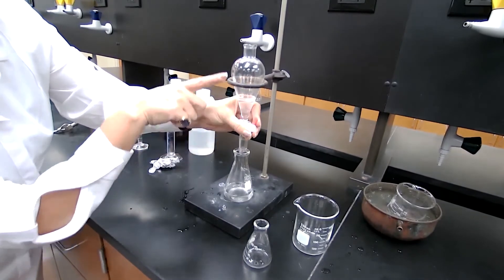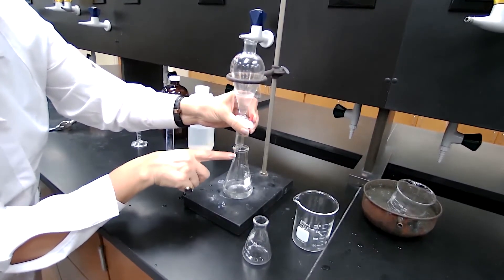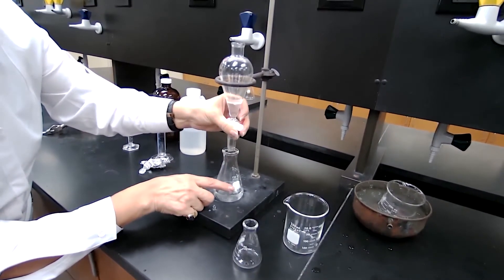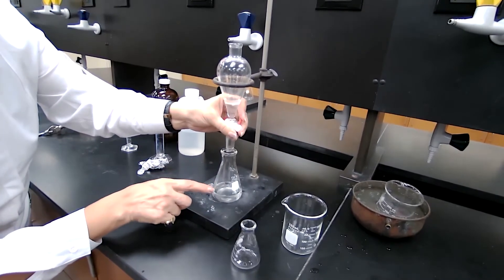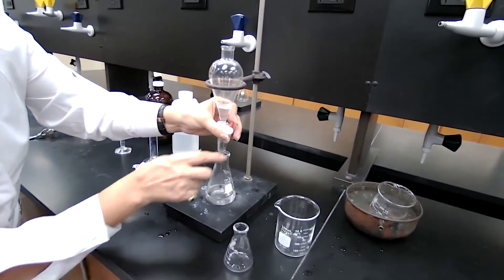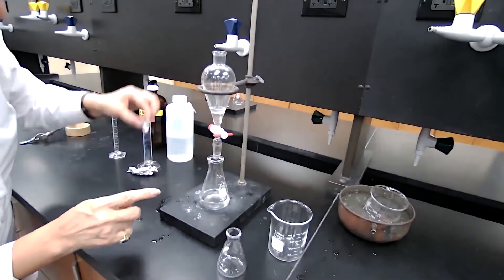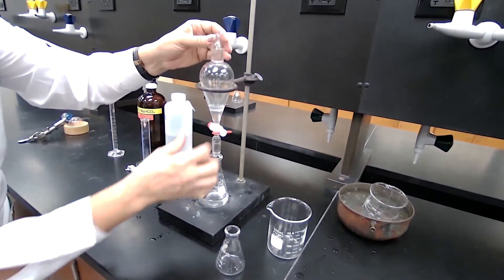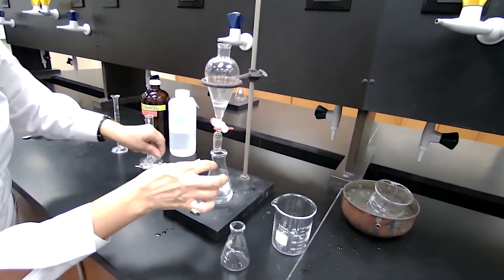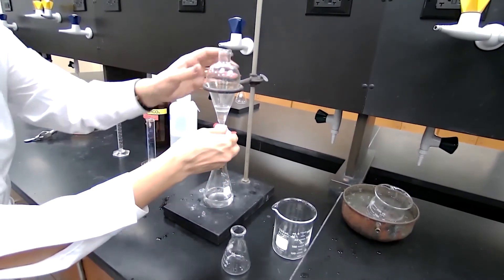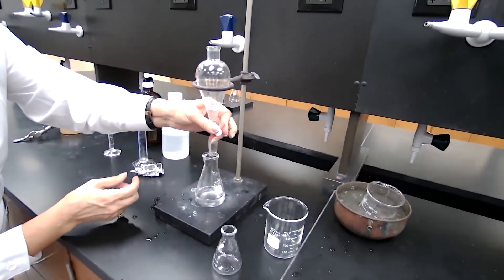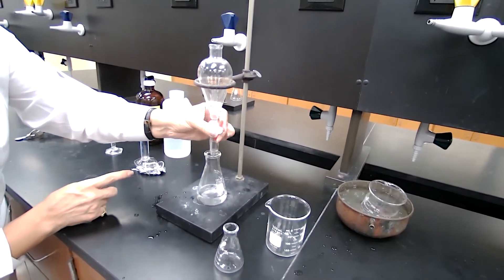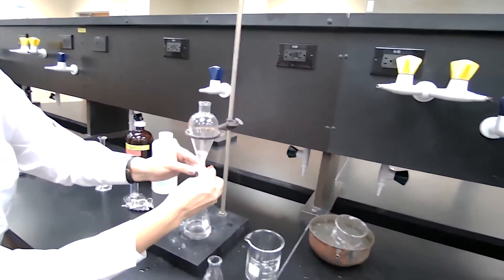You notice the height of the separatory funnel with respect to the flask is just touching. So in case if it moves around, it doesn't spill out of the glass. It gives me warning. And one bad habit students have - they keep the glass stopper on. It creates vacuum and it doesn't drain. They cannot remove the layer. And they're wondering why that happens. You don't want to create vacuum inside. The last drop.